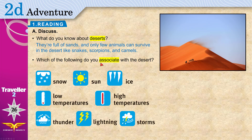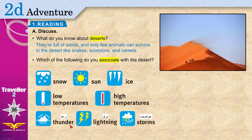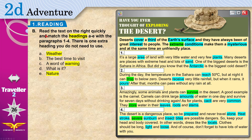Which of the following do you associate — meaning connect — with the desert? Snow, sun, ice, low temperature, very cold weather, high temperature, hot weather, thunder, lightning, and storms. Lightning is the light you see in the sky when rain is falling or about to fall; thunder is the sound. I would associate sun, high temperatures during the day, low temperatures at night, and sometimes rain and storms with the desert.